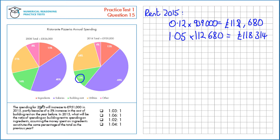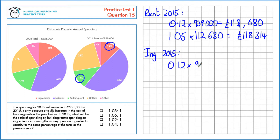Let's calculate the money spent on ingredients in 2015 as well. We're told that the total spending is £951,000, and that this percentage stays the same. So for ingredients in 2015, we have 12%, which is 0.12, of the total £951,000, which is £114,120.